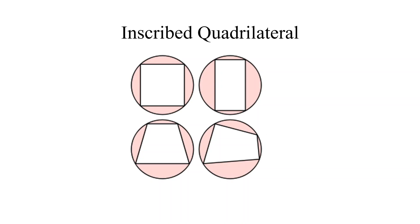Now, what is an inscribed quadrilateral? See this figure. In this figure, you see four circles. In these four circles, quadrilaterals are inscribed. This is a square, this is a rectangle, this is a trapezium, and this is another quadrilateral. In an inscribed quadrilateral, the sum of opposite angles of the quadrilateral is 180 degrees.